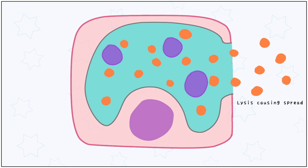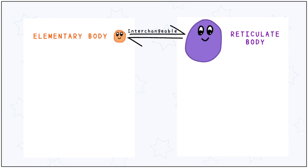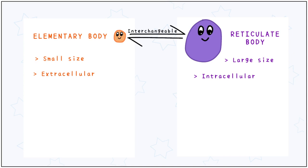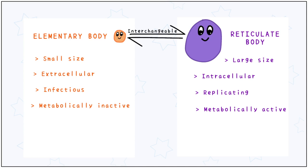Elementary body is small in size as compared to the larger reticular body. Elementary body exists extracellularly and is the infective form of the organism. Reticular body is found intracellularly and is the replicating form. To replicate, the reticular body naturally has to be metabolically active, while the elementary body is metabolically inactive. Since the reticular body exists intracellularly, it has a fragile cell wall, while the elementary body has a rigid cell wall, so it can survive until it finds another host cell to infect.